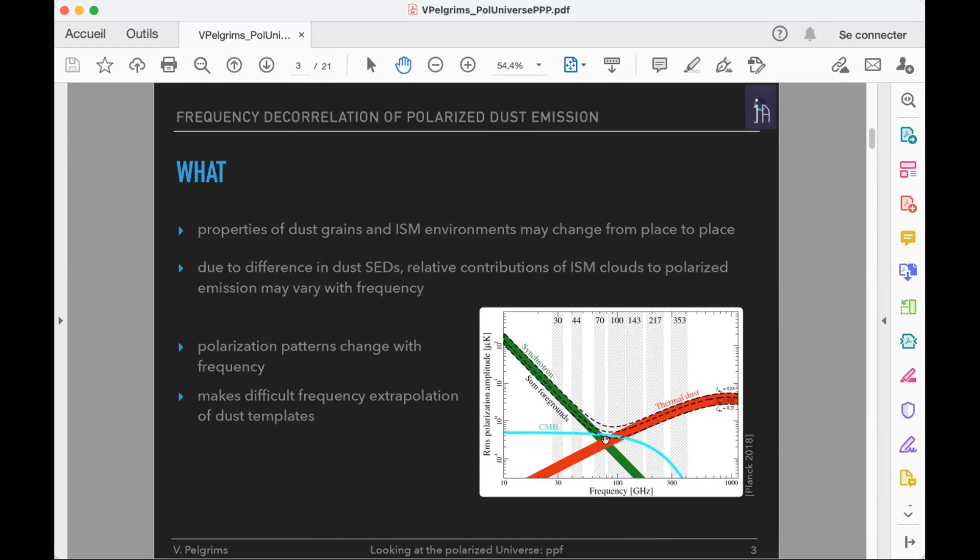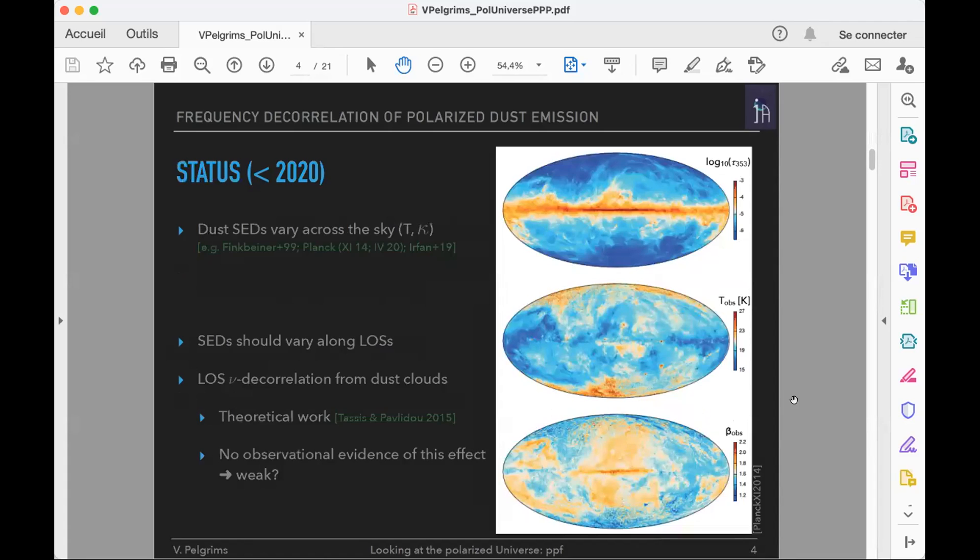This frequency extrapolation of dust templates is complicated by SED variation. We know since the end of the last century that SED variation varies across the sky, and this can be well illustrated by those full-sky maps from the Planck satellite where we see the temperature and the spectral index of the dust emission.